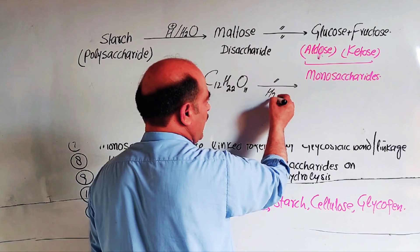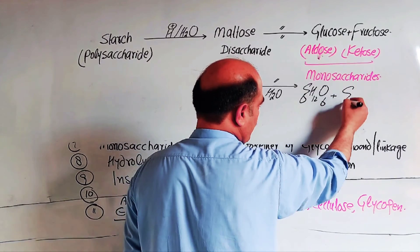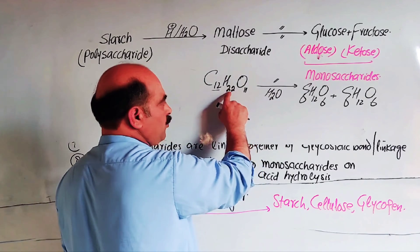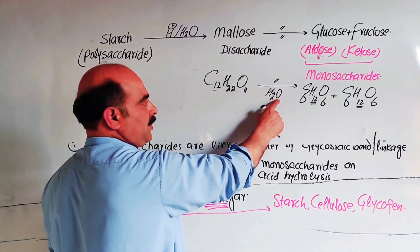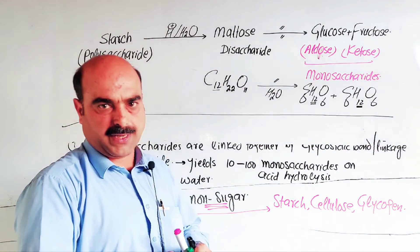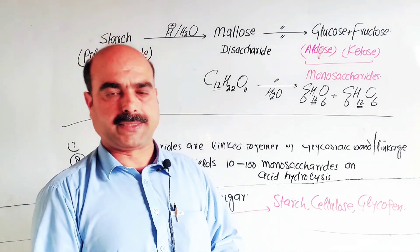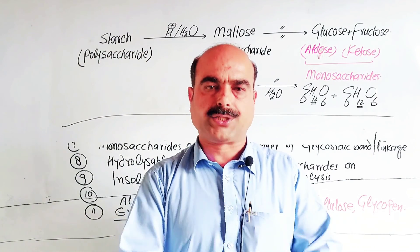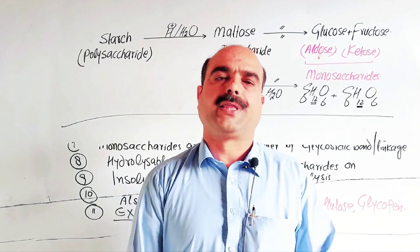On acid hydrolysis of the disaccharide, glucose and fructose (C6H12O6 each) are produced. Combining two monosaccharides: 12 carbons, 24 hydrogens, 12 oxygens — minus one water molecule gives C12H22O11. Starch by acid hydrolysis is broken down into monosaccharide units. Starch is the example of polysaccharide. Thanks for watching this video. Please share it with your friends and inform them about this channel.